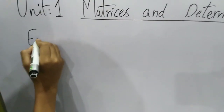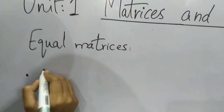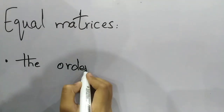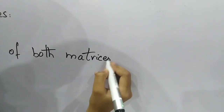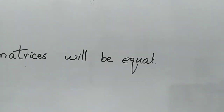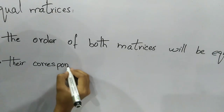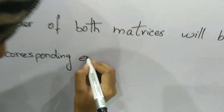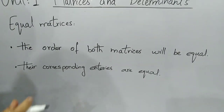Now I will tell you what equal matrices are. Equal matrices have two conditions. First, the order of both matrices must be equal. The other condition is that their corresponding entries must also be equal. If both conditions are fulfilled, the matrices are called equal matrices.